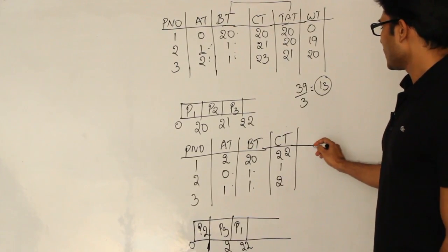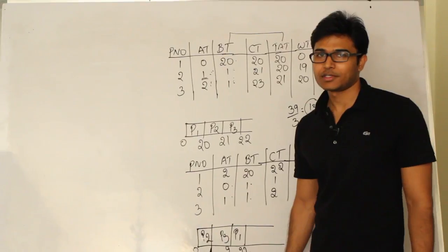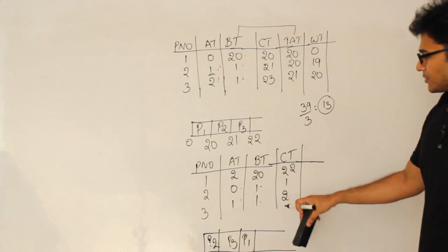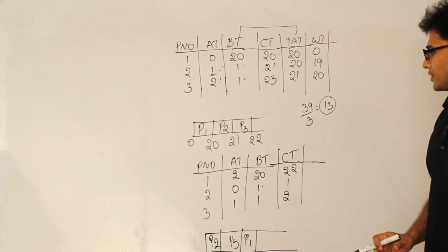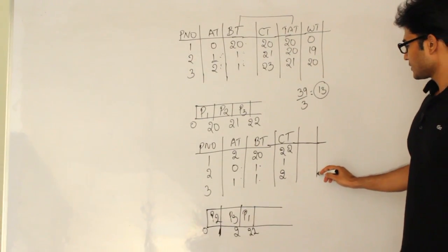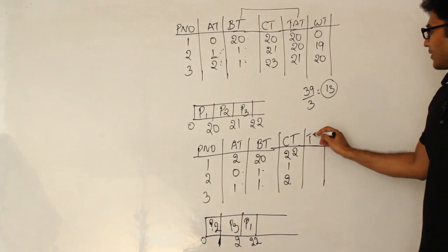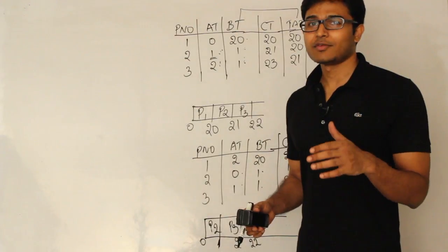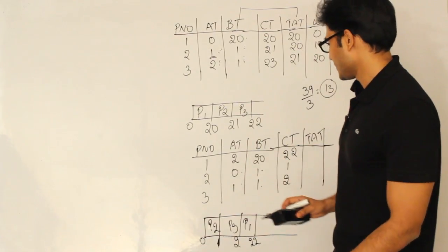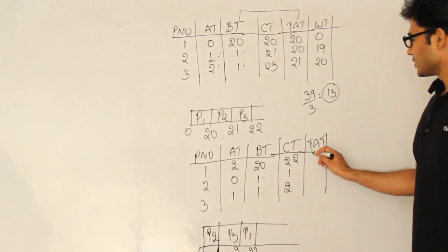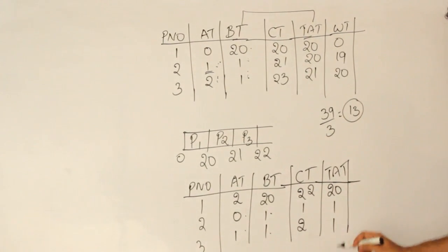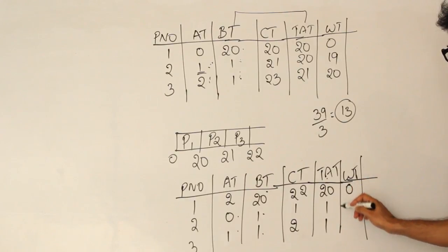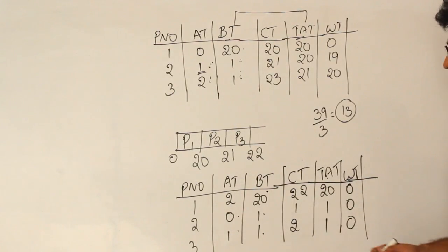Observe one thing: completion time will always be greater than burst time, because in order to complete a process we need to finish the burst time. Also, completion time will always be greater than arrival time, because a process cannot get finished before it arrives. Turnaround time is the difference between these two: 20, 1, and 1 for P1, P2, P3 respectively.